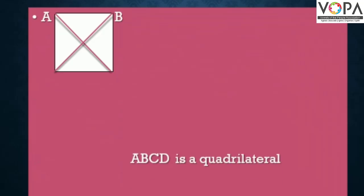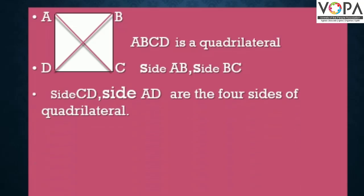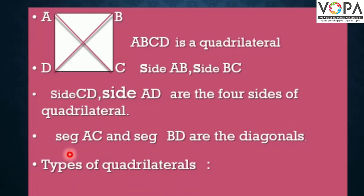ABCD is a quadrilateral. Side AB, Side BC, Side CD, and Side AD are the four sides of the quadrilateral. Segment AC and Segment BD are the diagonals.